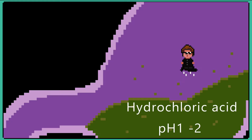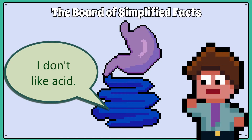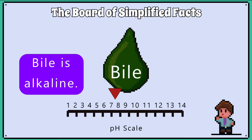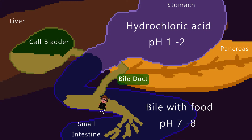The stomach contains hydrochloric acid, and eventually the food being digested there needs to move on to the small intestine. The problem is the small intestine is not adapted for holding acid, so the acid needs to be neutralised. Bile is alkaline, so when food enters the small intestine the gallbladder releases the bile, which travels through the bile duct and mixes with the partially digested food from the stomach.